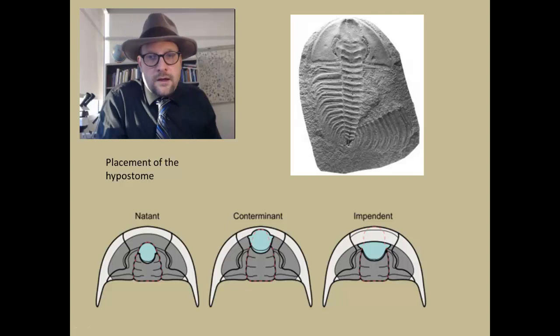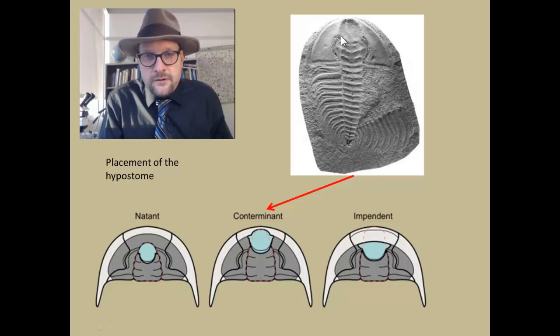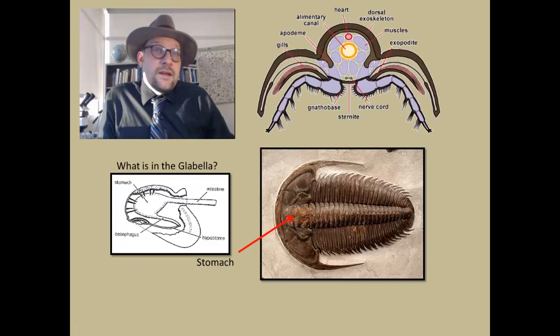Alright, so let's take a look at this fossil, this fossil trilobite, and try to determine which one of these three conditions it has. Alright, yes, it is the middle condition here, so it is the conterminant. You can see that the hypostome extends all the way to the margin there, and the margin is not really thickened.